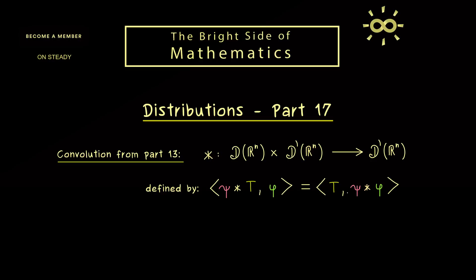As you might remember, we have to change things a little bit — we have to give a rotated hat to psi. This is not a complicated operator; it's just a reflection. This new function is just psi of minus x, so it's almost the same function because we simply reflected it over the y-axis.